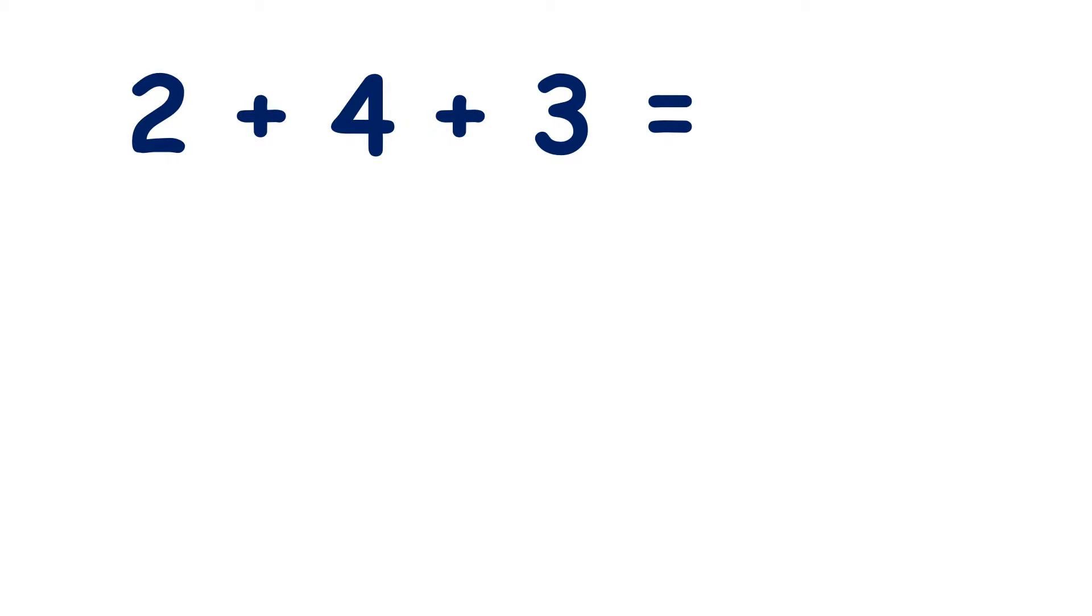So here we have 2 plus 4 plus 3. When adding it's often easiest to start with the largest number. So 4 plus 3 is 7. We still need to add the 2, so 7 plus 2 equals 9.